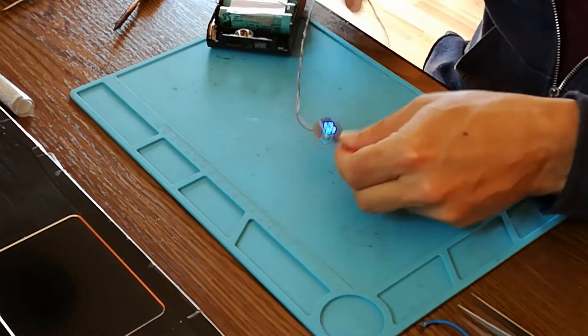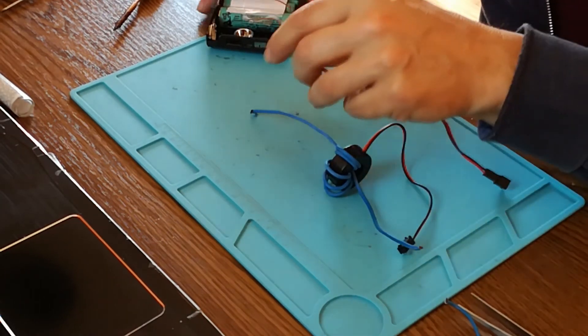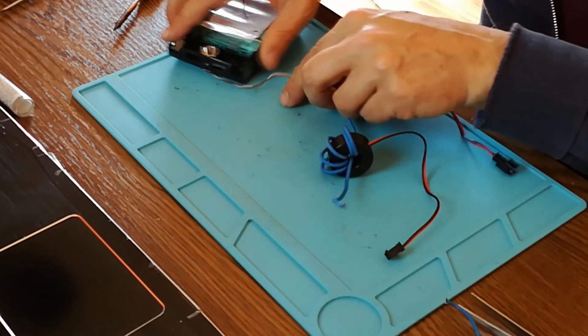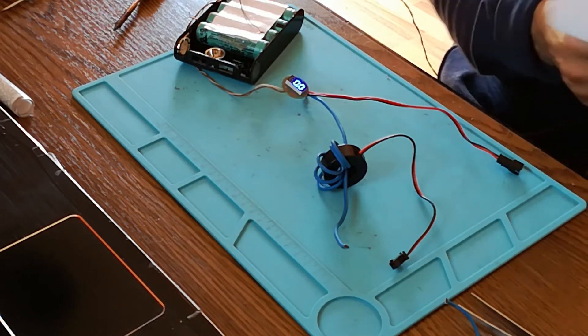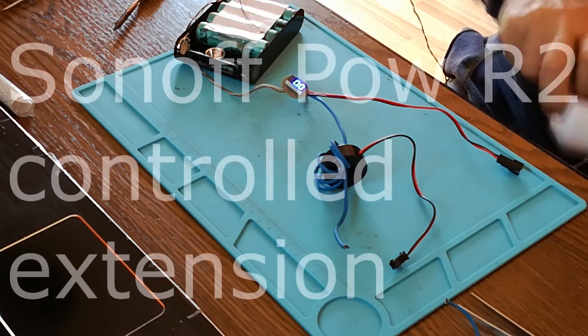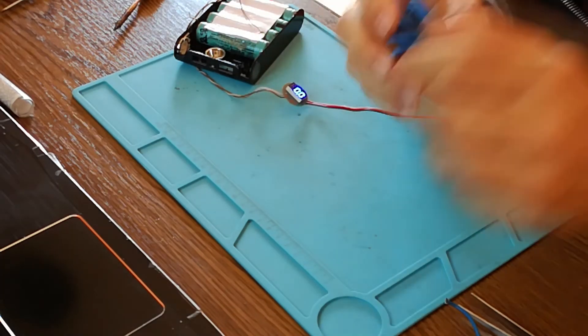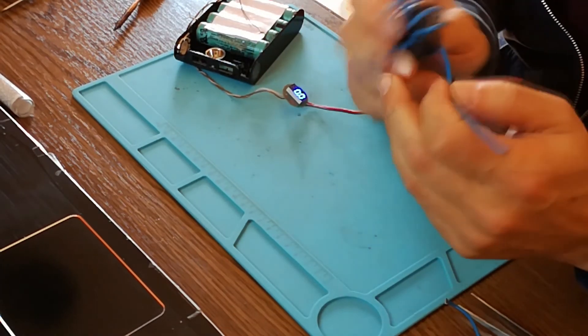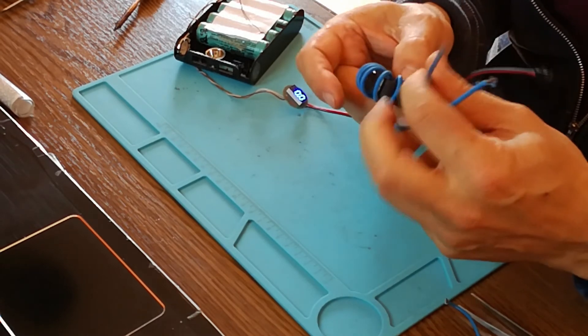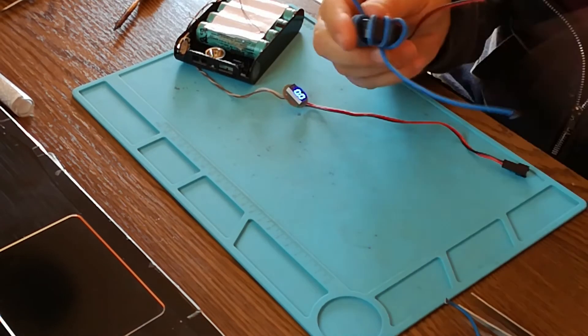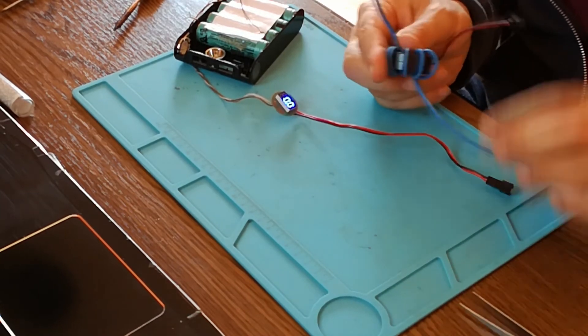And now what I want to do: I want to insert this coil into my Sonoff controlled extension cord. But because this is rated for 100 amps, I have to make it more sensitive because I don't want to work with too much current for now.